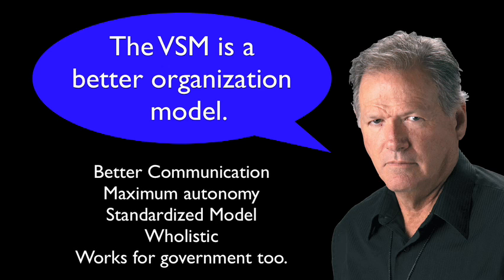The viable system model has many advantages over the organization chart. All the communication lines are clear. It allows for maximum desirable autonomy of the operations. It allows every person working in the organization to know exactly where they stand. It is a holistic and systemic approach that works for any type of organization, not only businesses.